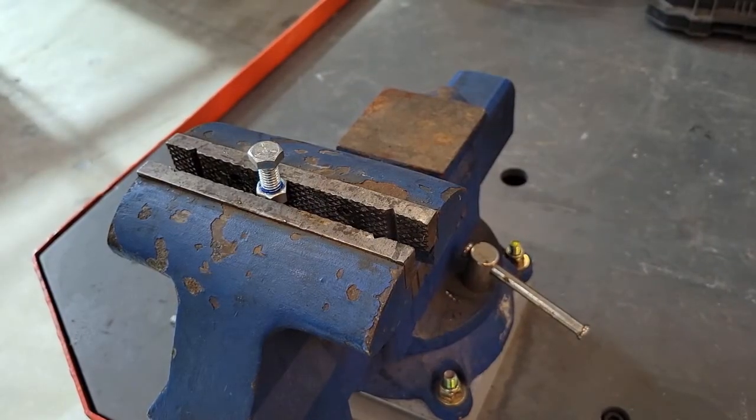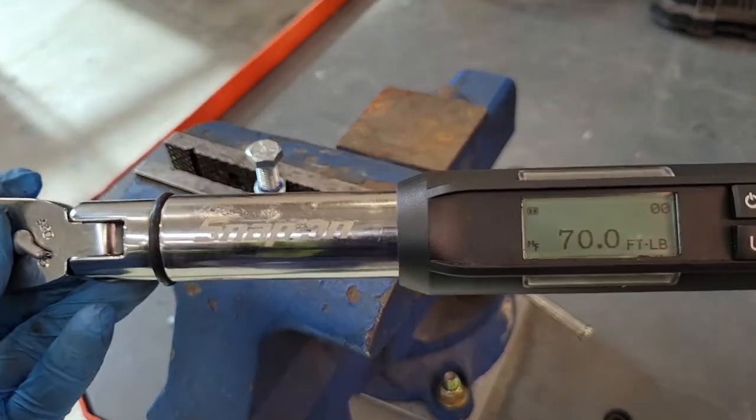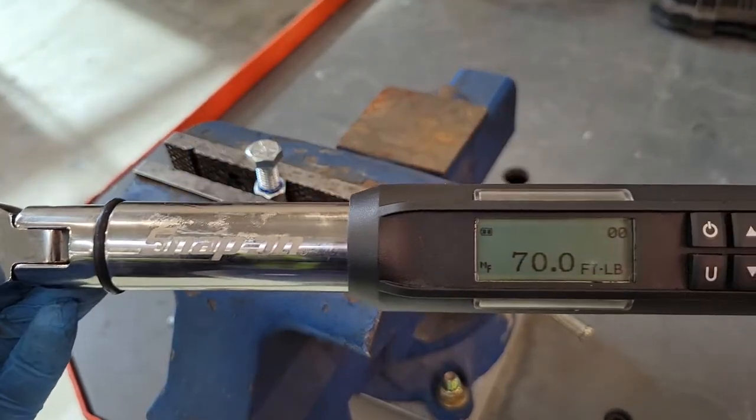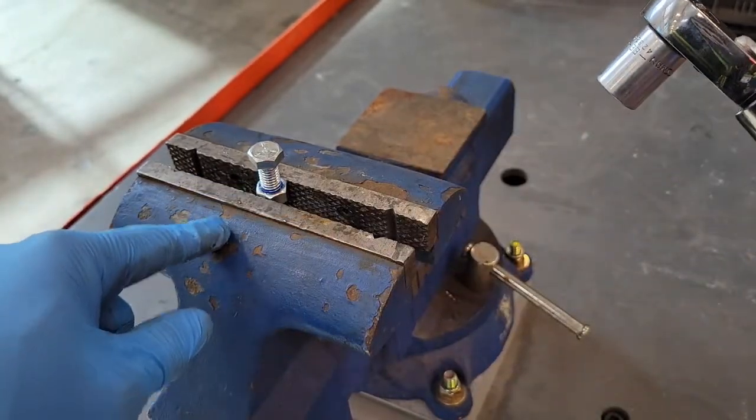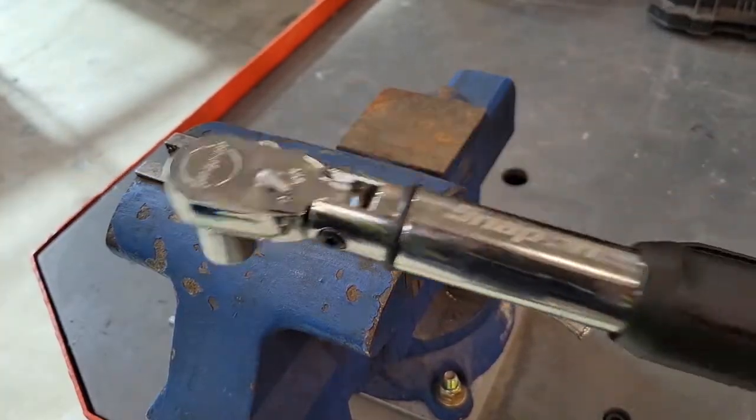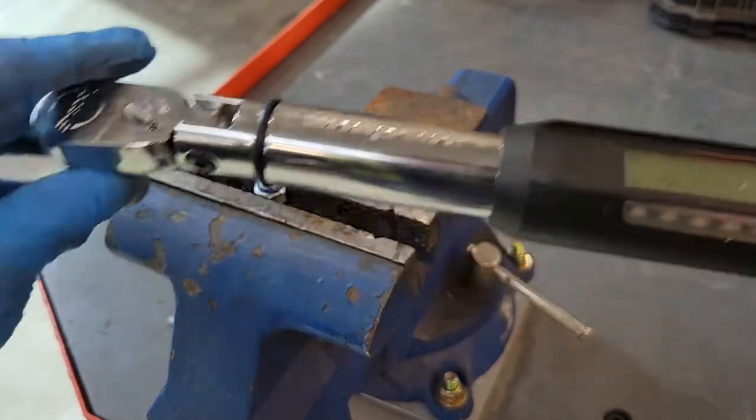Okay, we'll start with the blue thread locker first. I got my torque wrench set for 70 foot pounds. I don't see it going above that. Now we're going to torque it in a right hand manner until it breaks through the thread locker and we'll look at the measurement on the torque wrench.